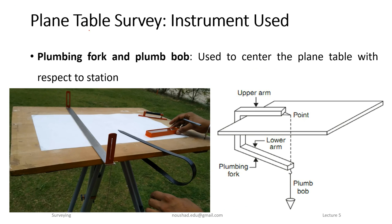Then there is the plumb bob. The plumb bob is U-shaped and must be used in the correct style. On the ground point, the plumb bob is used to center the instrument over the ground point, as seen on the paper.